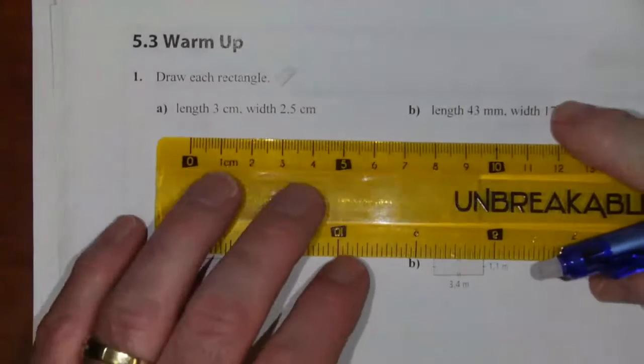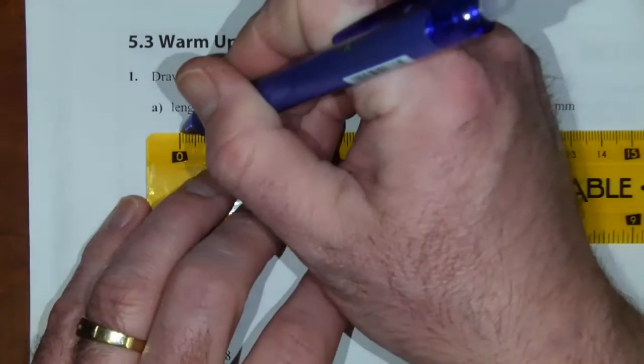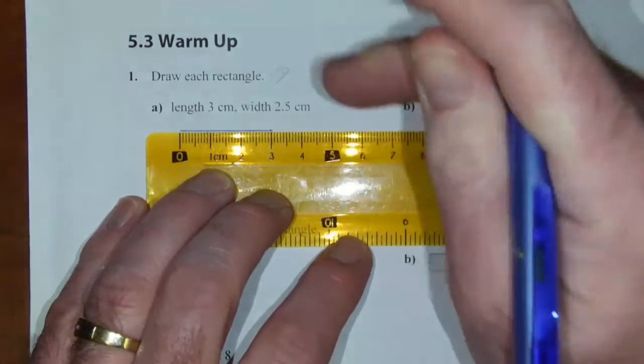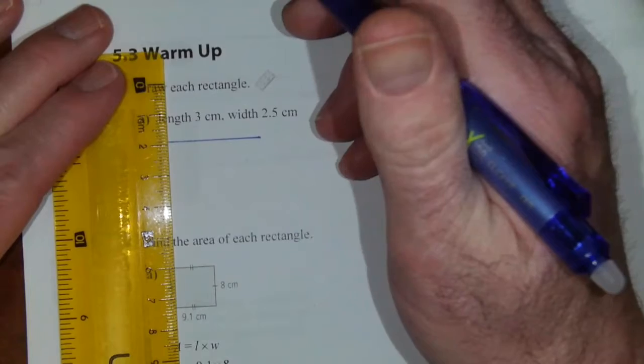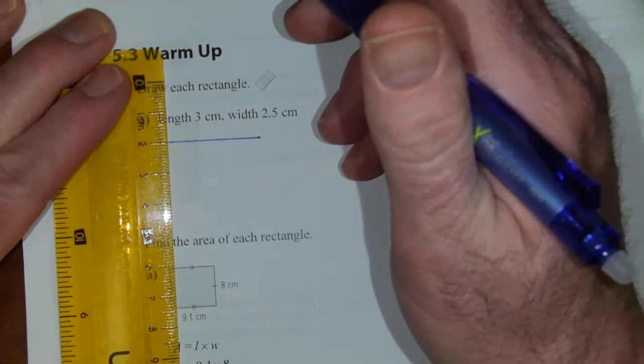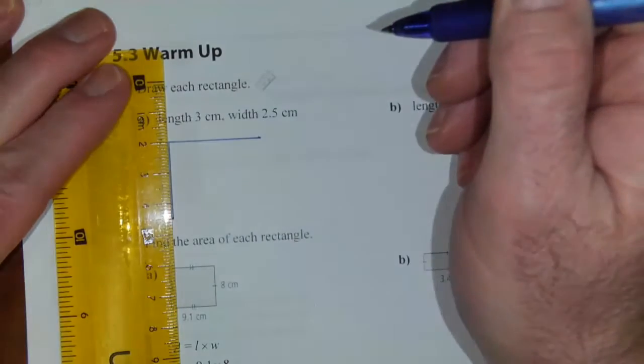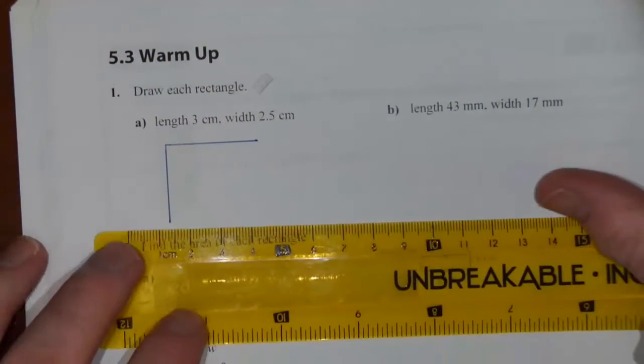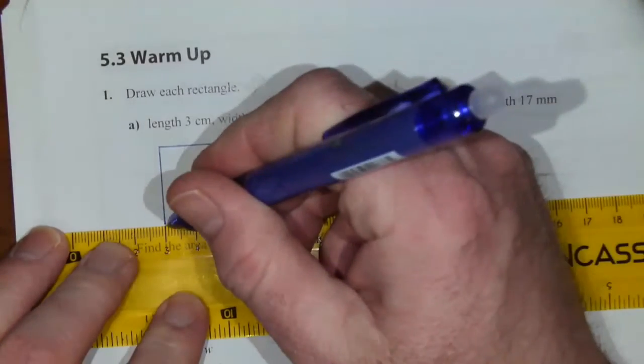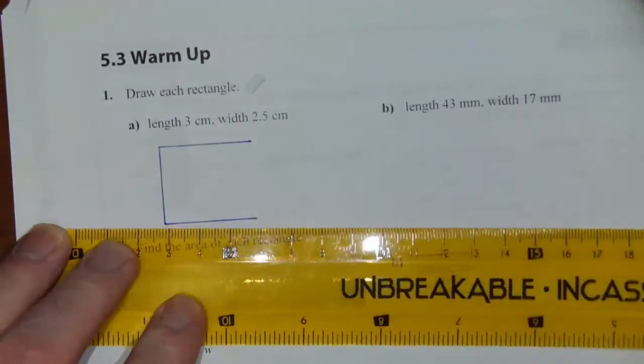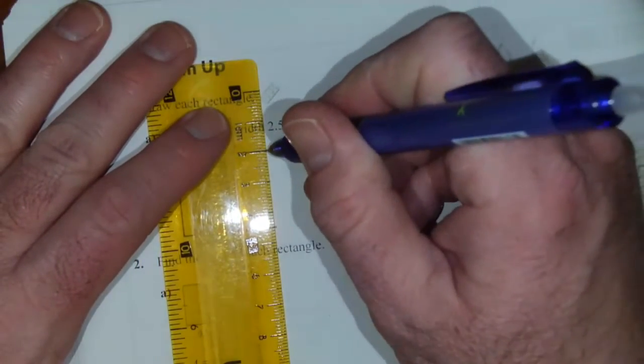We've got a length of three centimeters and a width of two and a half centimeters. We'll start with three centimeters and then I need to go two and a half centimeters for width. It's going to be approximately like that and then three centimeters and then hopefully this is pretty close to two and a half.